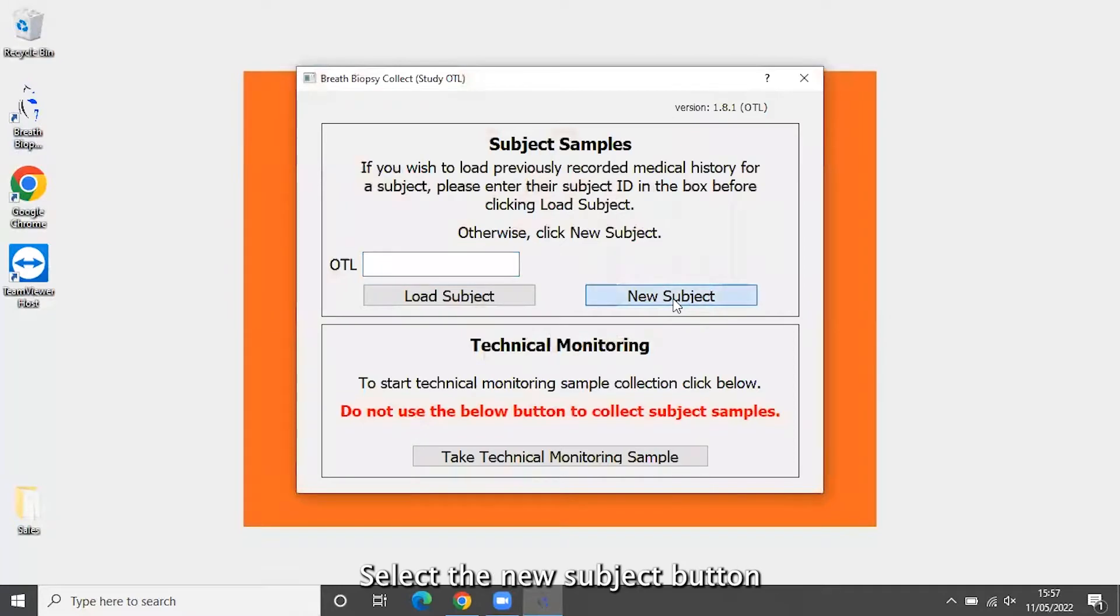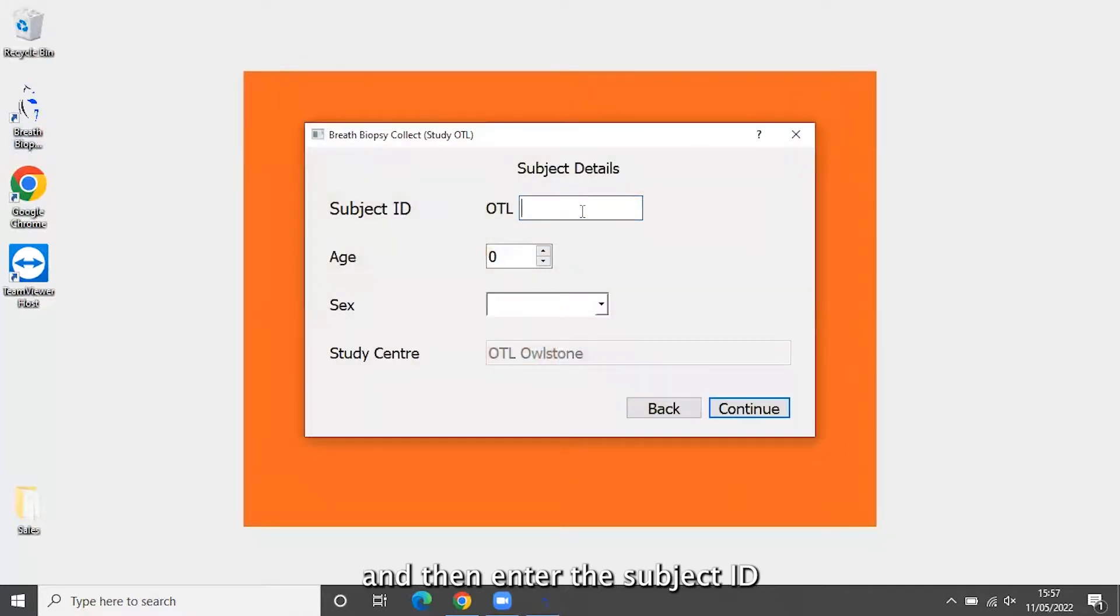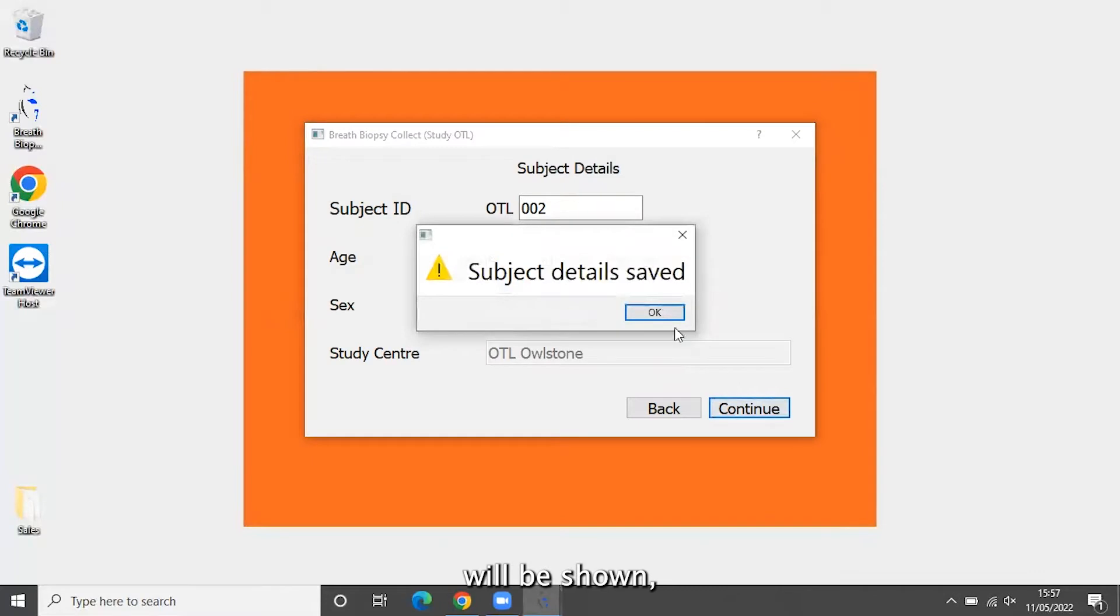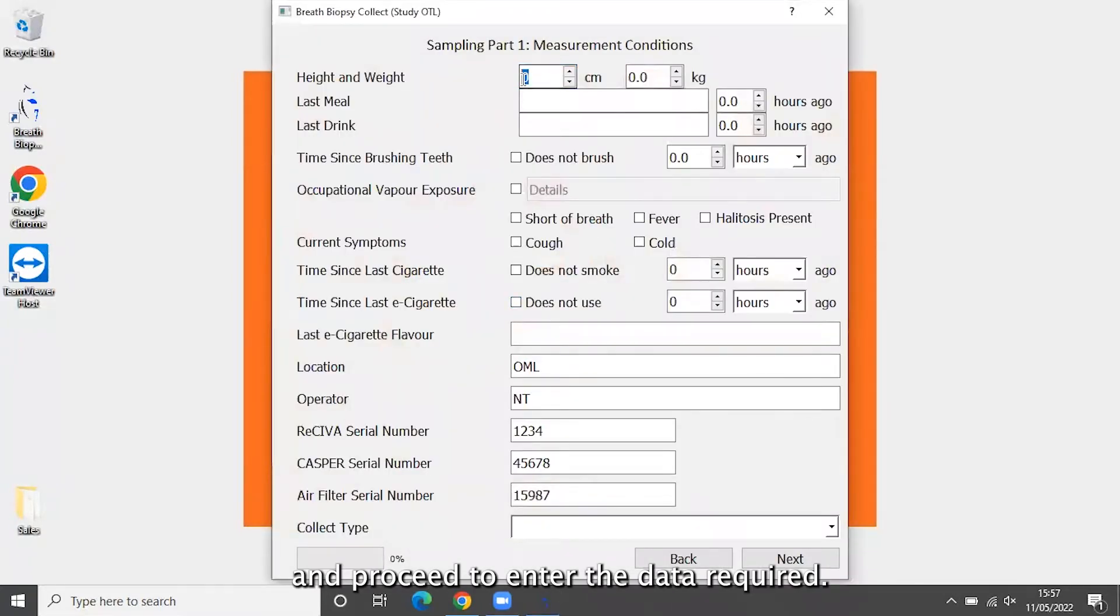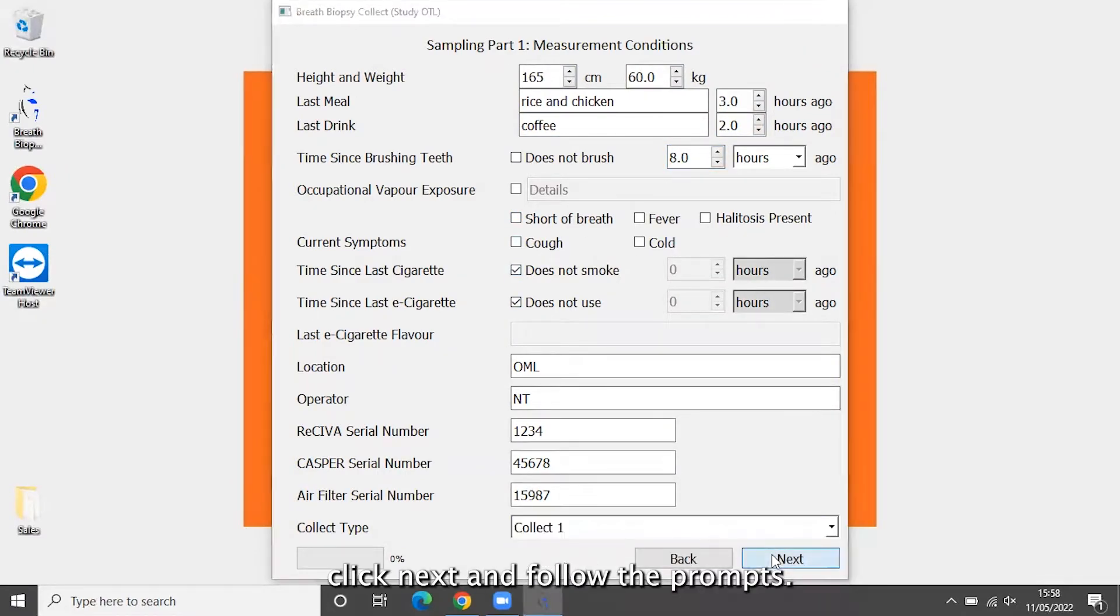Select the new subject button and then enter the subject ID and details to create the subject profile in the system. The home screen of the software will be shown. Select new sample and proceed to enter the data required. Once completed, click next and follow the prompts.